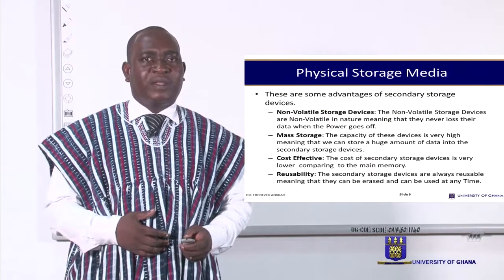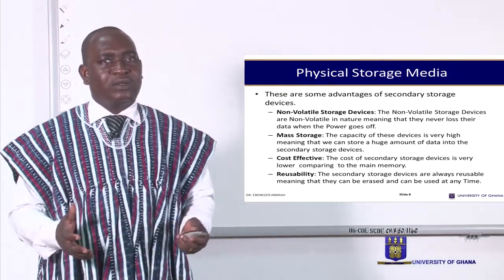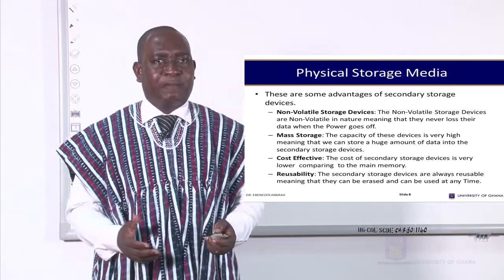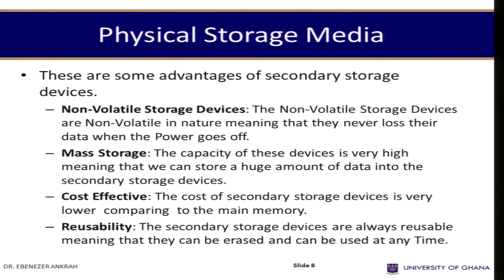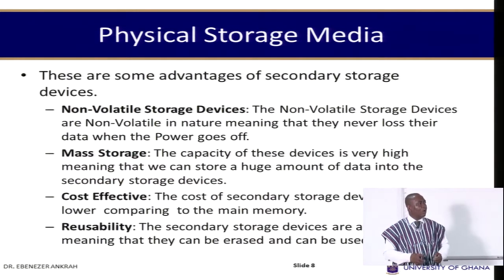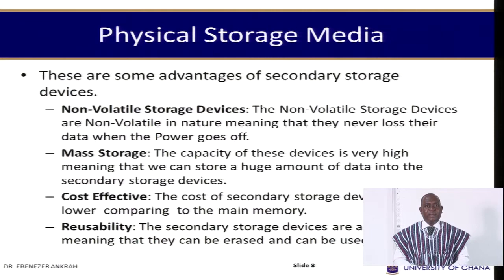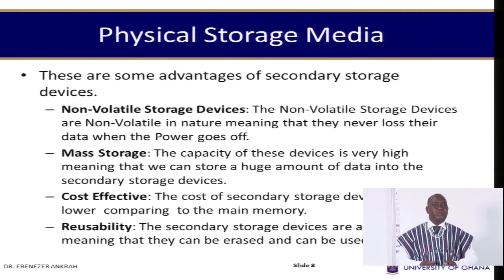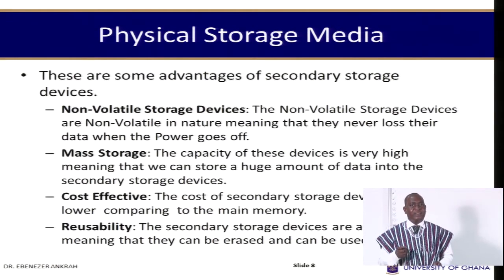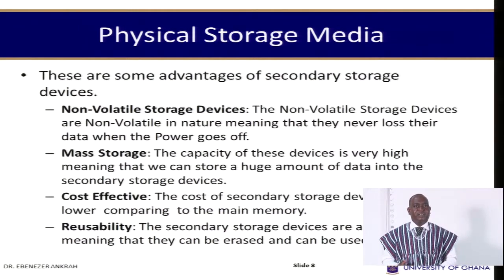There are certain advantages of the auxiliary or secondary storage devices. One, they are not volatile. When data is saved on these secondary storage devices, they cannot be erased. Again, there is a mass storage capacity for these secondary storage devices, and you can save so much on these storage devices — even in excess of terabytes. We have moved from kilobytes, megabytes, gigabytes, and we are now in the terabytes era, and these devices have those capacities.